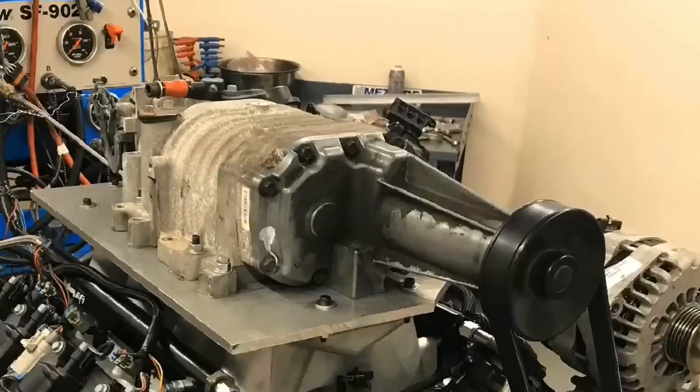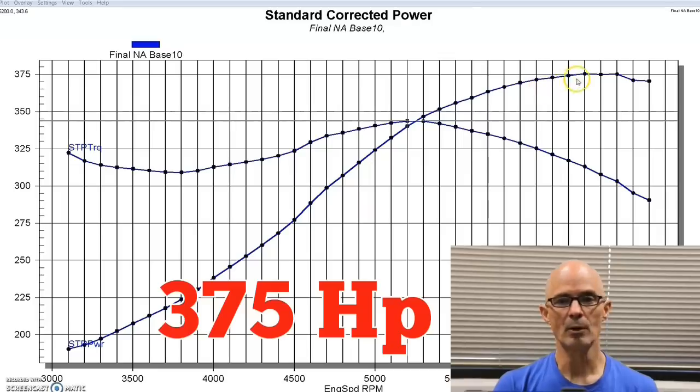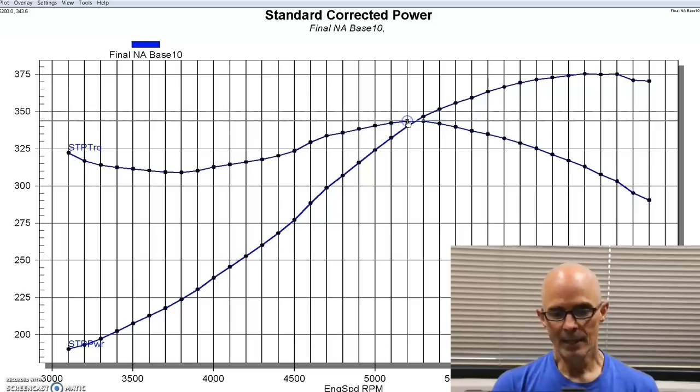Before we could run the M90 Supercharger on our 4.8 liter test motor, we had to run the motor naturally aspirated. I always like to provide a baseline so that I can find out whatever the gain was worth. So equipped with that Brian Tooley cam and the high ram intake, our 4.8 liter produced 375 horsepower. So not too bad. And 344 foot pounds of torque. Again, not too bad.